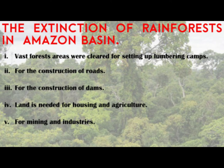Now let's see the reasons behind the extinction of rainforest in the Amazon basin. As the population is growing in this area, vast forests were cleared. Lumbering camps cut down trees and cleared the area for construction of roads and dams. Land is needed for housing and agriculture. People are setting up industries and doing mining over large areas, all of which resulted in the disappearing or extinction of this rainforest.